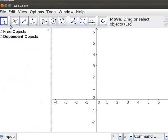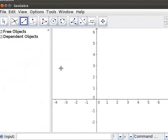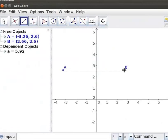Select the Segment Between Two Points Tool from the Toolbar to draw a Segment. Click on the Drawing Pad, Point A and then on Point B. Segment AB is drawn.